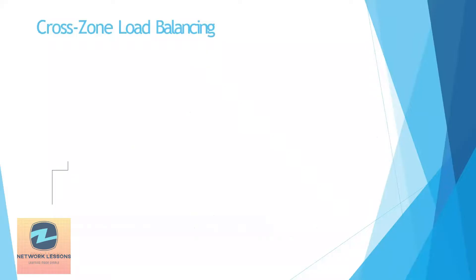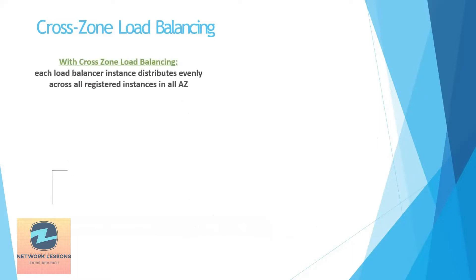Now, cross-zone load balancing — I want you to understand this. It's already there, but I want to explain the effect. Basically, what is the difference between having cross-zone load balancing enabled versus not having it enabled?